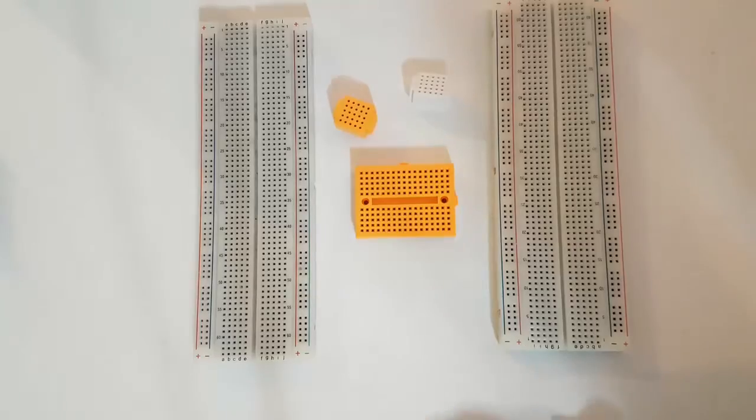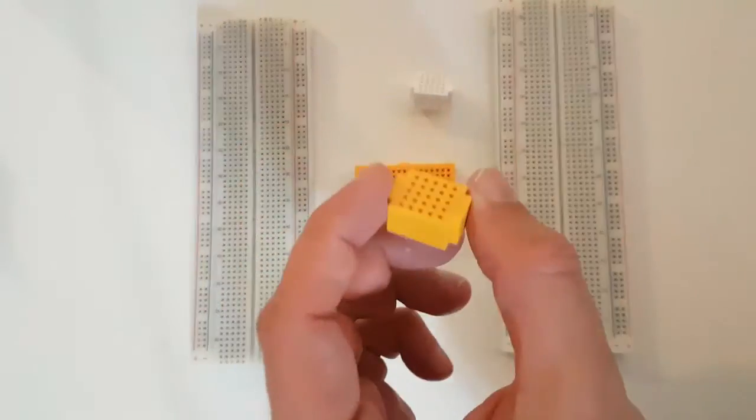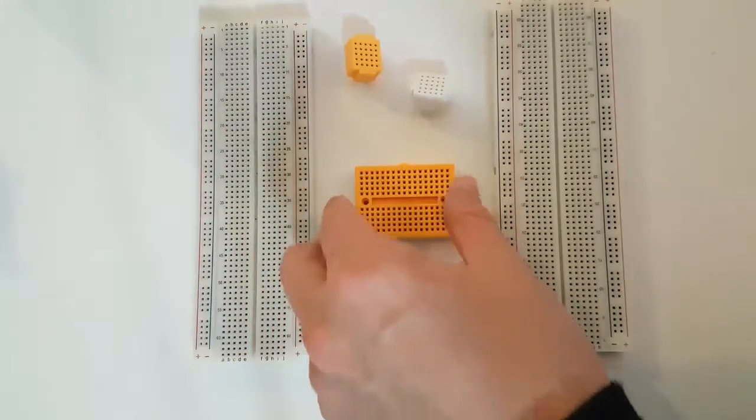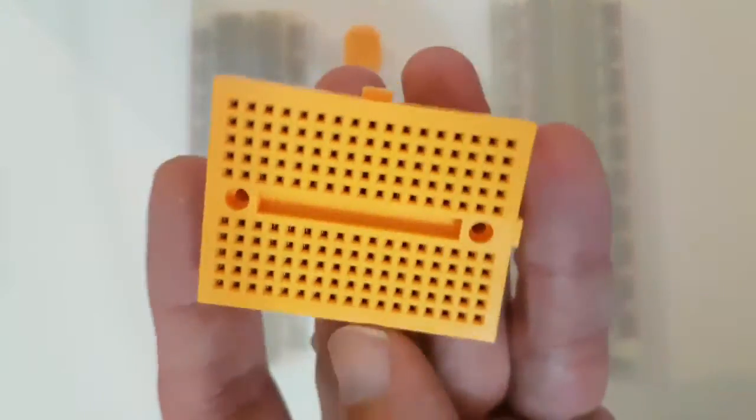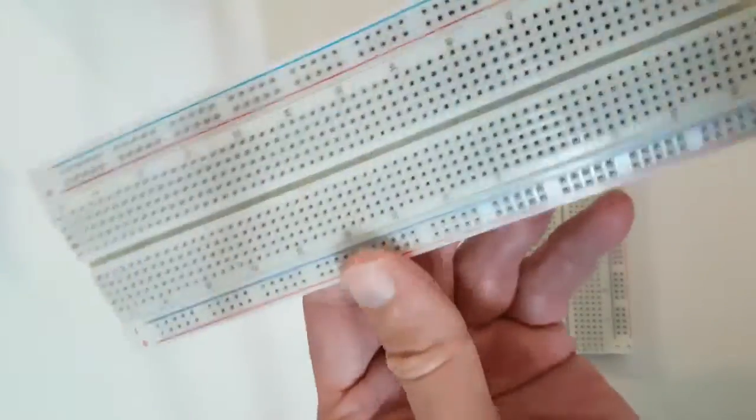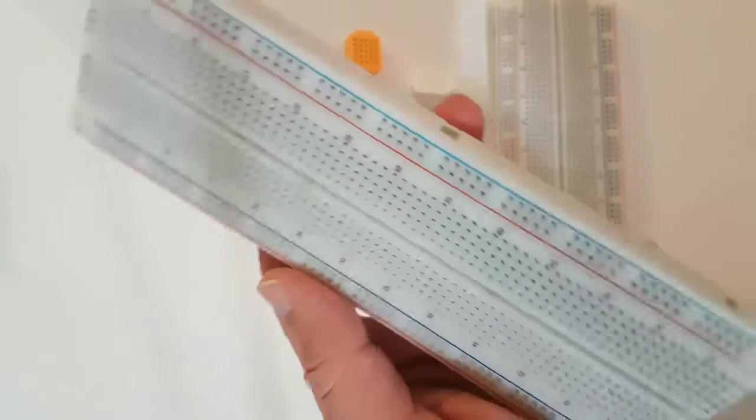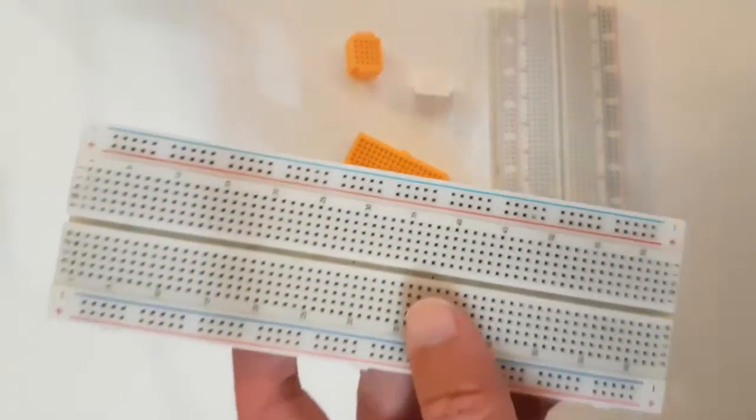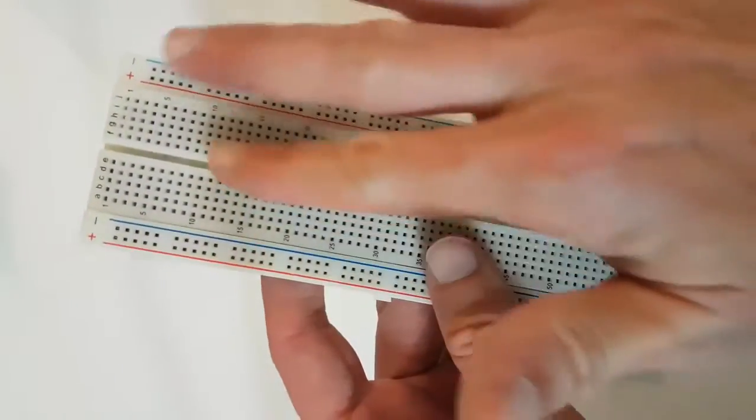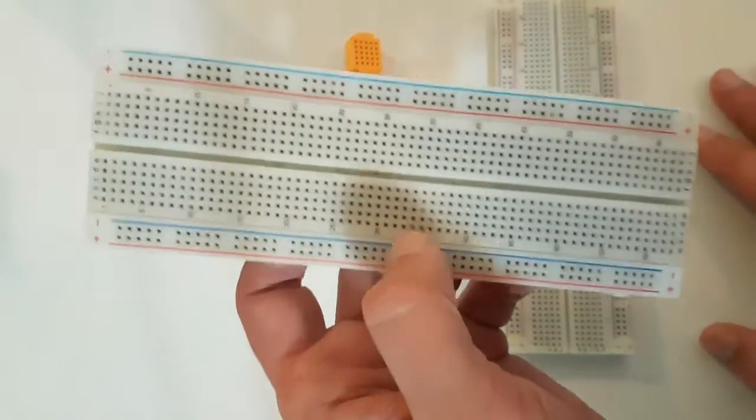As you can see, there are lots of kinds of breadboards. This is a small one for simple connections. This is a bigger one. And this is the most frequent and common type, which has two power rails and two connection rails.